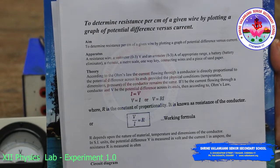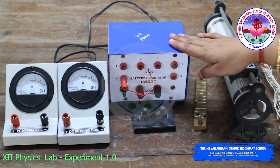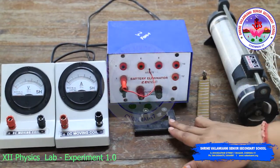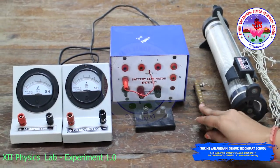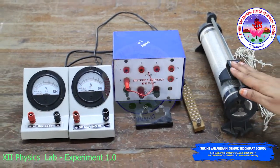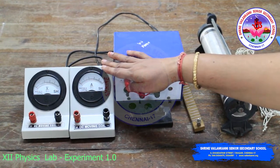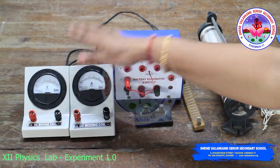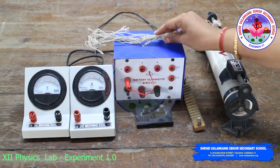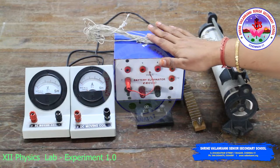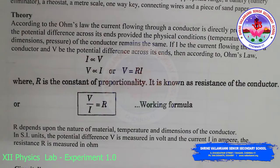The apparatus we need: a battery eliminator, a one-way key, an unknown resistance wire, a rheostat, an ammeter of appropriate range, a voltmeter, and connecting wires. Now let us see the working theory.